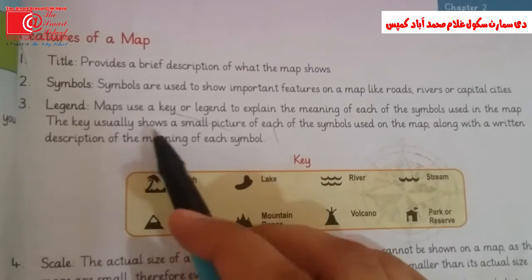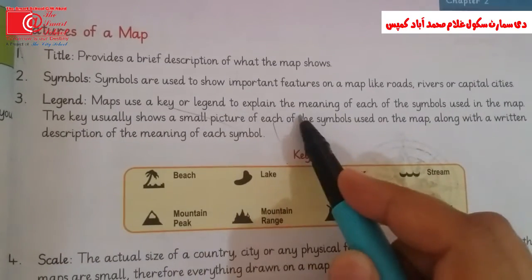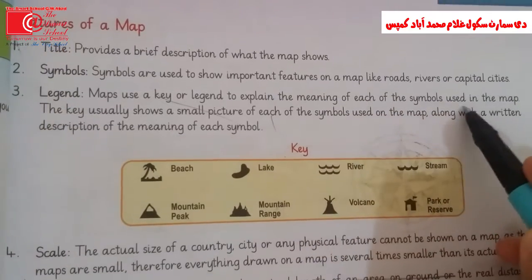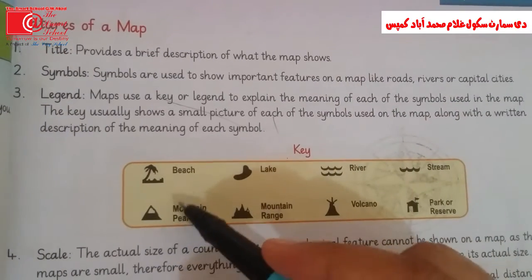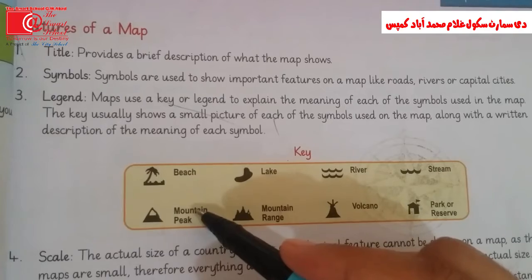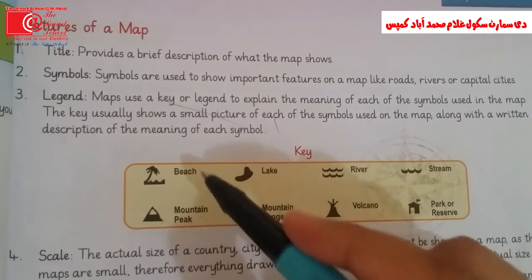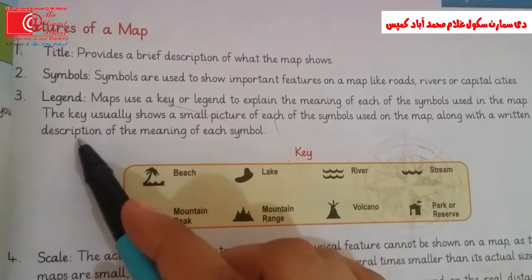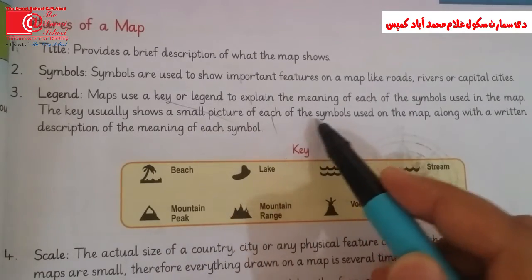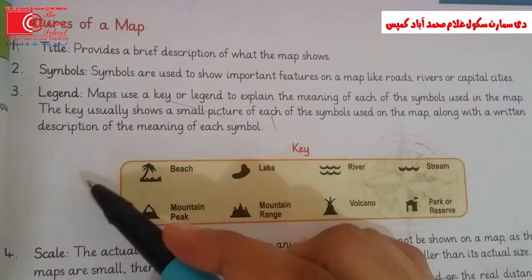Number three is legends. Maps use a key or legend to explain the meaning of each of the symbols used in the map. The symbols are explained in a written description — we call this the legend or key. The key usually shows a small picture of each symbol used on the map along with a written description of its meaning.